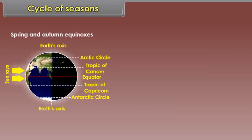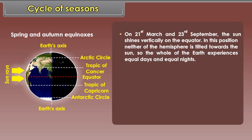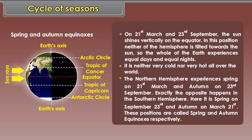Spring and Autumn Equinoxes. On 21st March and 23rd September, the sun shines vertically on the equator. In this position, neither of the hemispheres is tilted towards the sun. So, the whole of the earth experiences equal days and equal nights. It is neither very cold nor very hot all over the world. The Northern Hemisphere experiences spring on 21st March and autumn on 23rd September. Exactly the opposite happens in the Southern Hemisphere. Here, it is spring on September 23rd and autumn on March 21st. These positions are called spring and autumn equinoxes respectively.